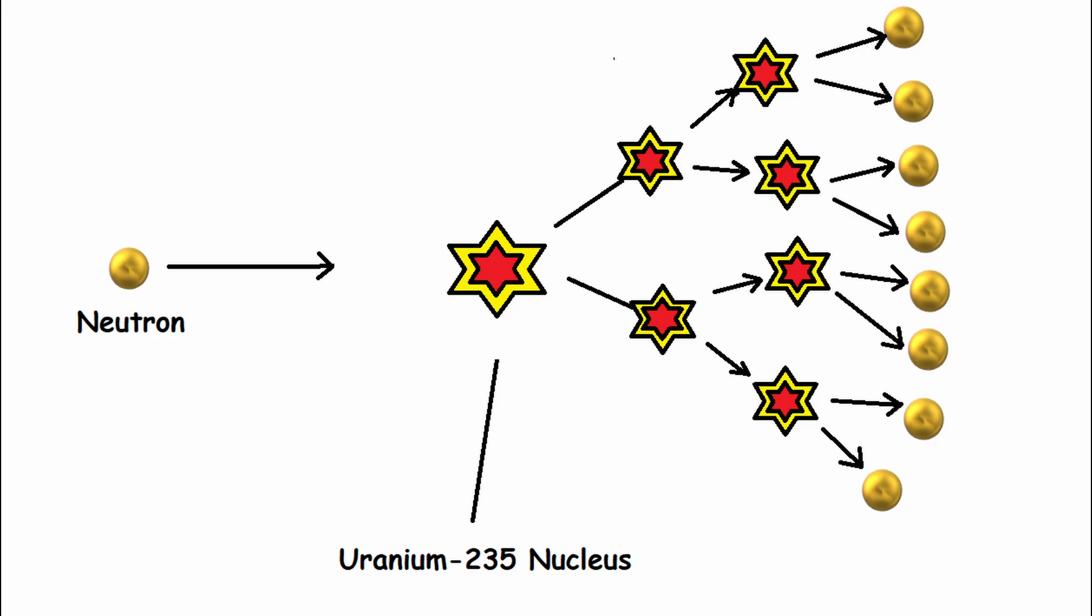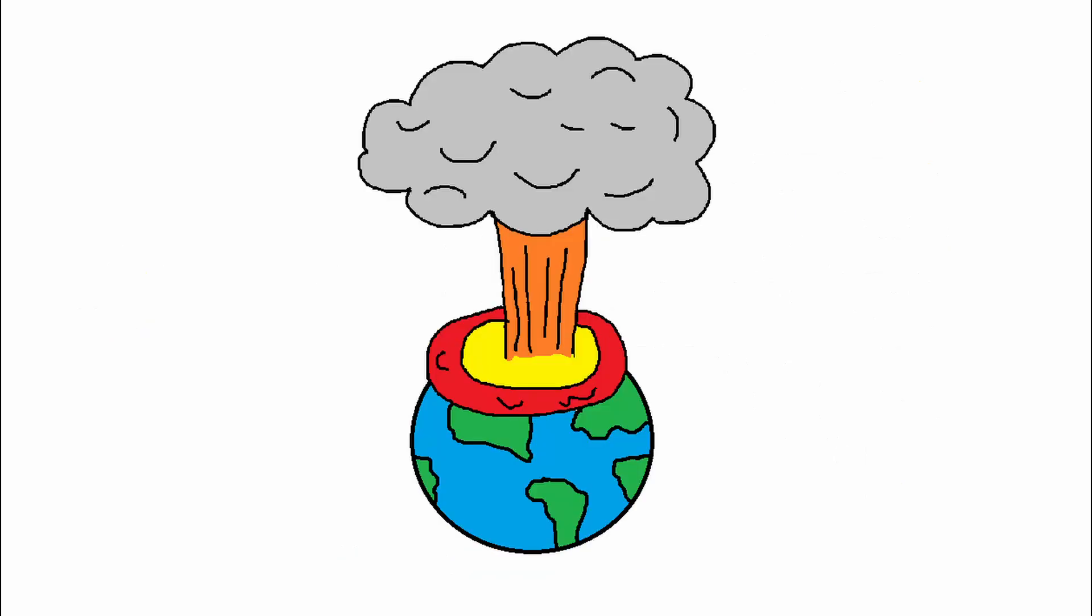In a large enough mass of uranium, this chain reaction would release the energy of trillions upon trillions of atomic nuclei as they are split, all in an instant, generating an incredibly massive amount of energy released in an explosion.